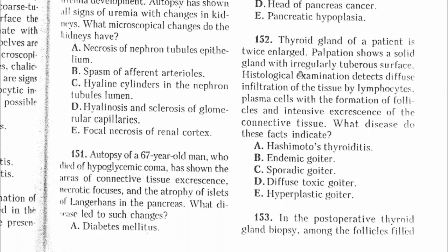Question 152: The thyroid gland of a patient is twice enlarged, showing a solid gland with irregular tuberous surface. Histological examination detects diffuse infiltration by lymphocytes and plasma cells with follicle formation and intensive connective tissue excrescence. Microscopically, Hashimoto thyroiditis is characterized by infiltration with lymphocytes, plasma cells, immunoblasts, macrophages, lymphoid follicles with germinal centers, and atrophic thyroid follicles devoid of colloid. The answer is Hashimoto thyroiditis.